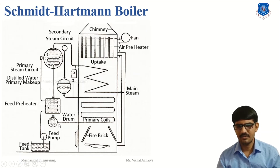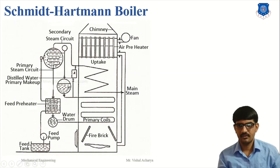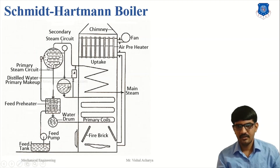Water is transferred from the water drum to the primary coil, i.e., the primary evaporator, where water is converted to higher pressure, approximately 100 bar, and transferred back to the water drum. Then steam is supplied to the secondary drum. In the secondary drum, it passes through tubes where higher pressurized steam supplies heat to the lower pressurized steam, meaning the impure water. The impure water is then converted into steam and passed to the superheater.